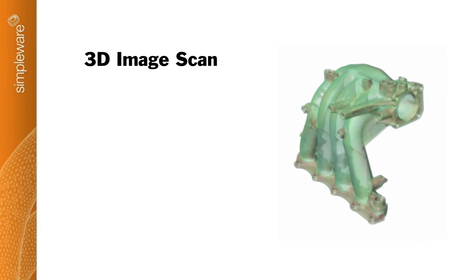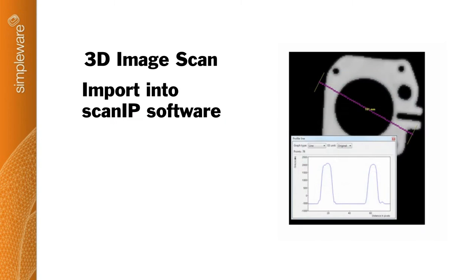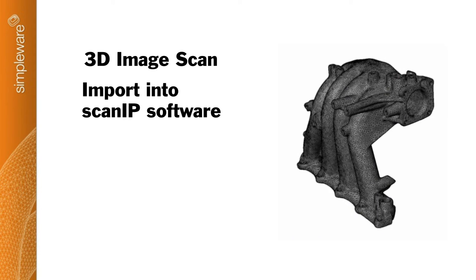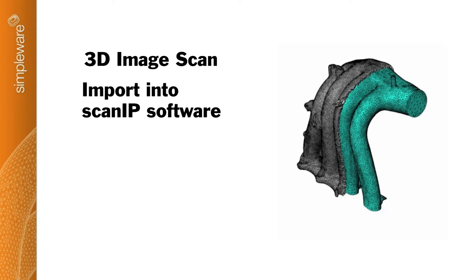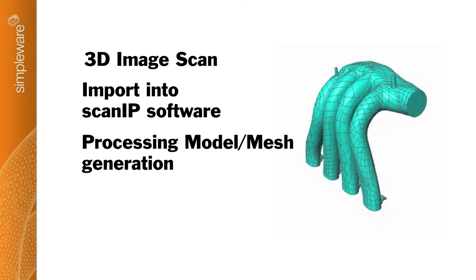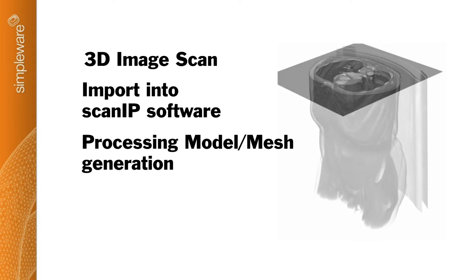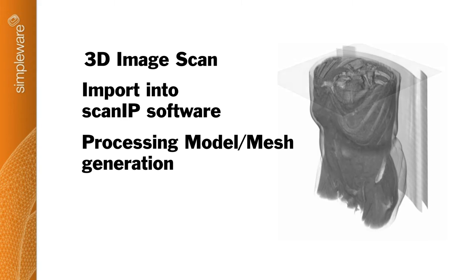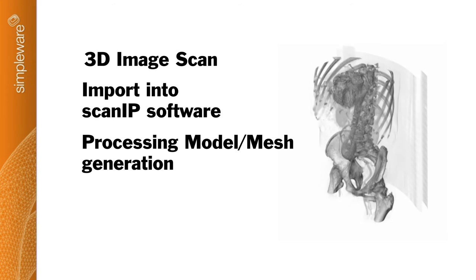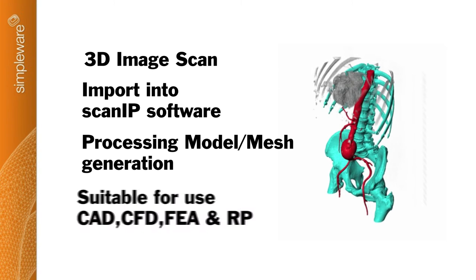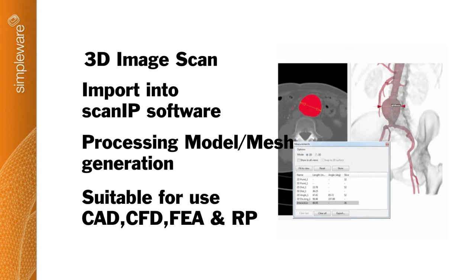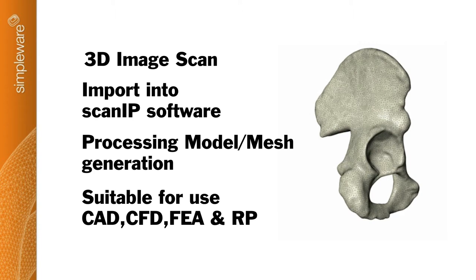The whole process starts with scanning an object. That image would then be imported into our software, ScanIP, and processed in such a way that we could reconstruct surfaces from it — breaking it up into primitive shapes which are suitable for well-established commercial physics-based simulation solvers.